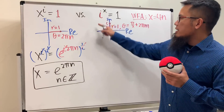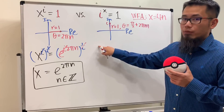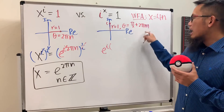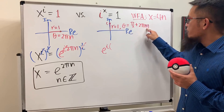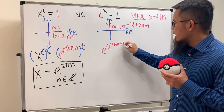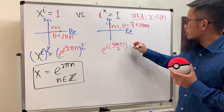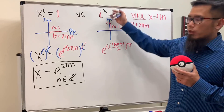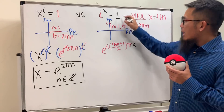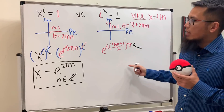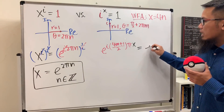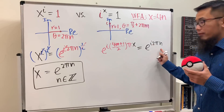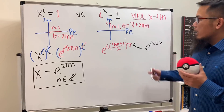So i is the same as r·e^(iθ), which gives us e to the i times the angle. Getting a common denominator, that's e to the i·(4m+1)/2 · π. All of this is raised to the x power, so we multiply by x. And 1 on the right-hand side is e to the i·2πn. Both m and n are integers.